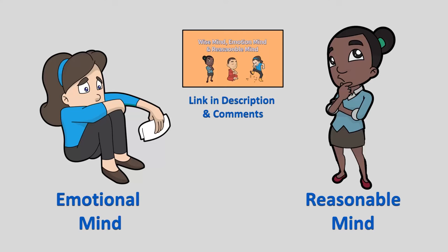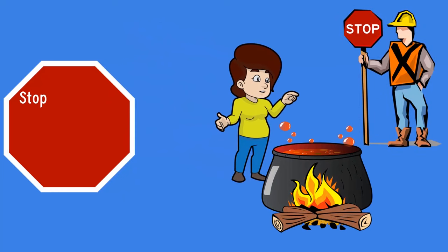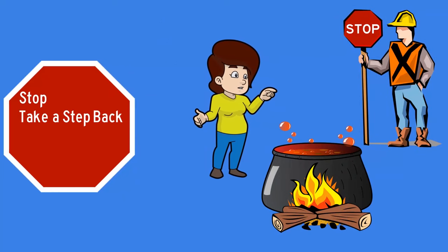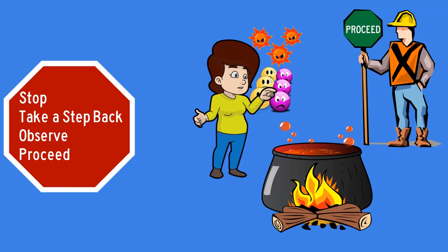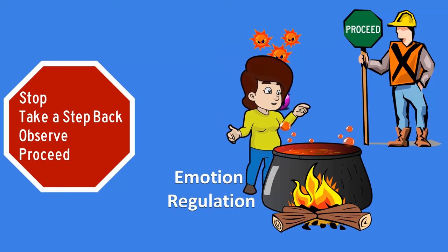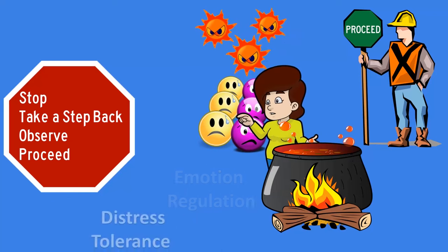One thing that can help when we're feeling an intense emotion is to employ the STOP skill right away. STOP is an acronym that stands for: Stop what you're doing, Take a step back from the situation, Observe what's going on—in this case, we're observing what's going on with our emotions and assessing how intense they are on a scale from 1 to 10—and then Proceed. Depending on how intense our emotions are, we either proceed by using some emotion regulation skills or we proceed with some distress tolerance skills.